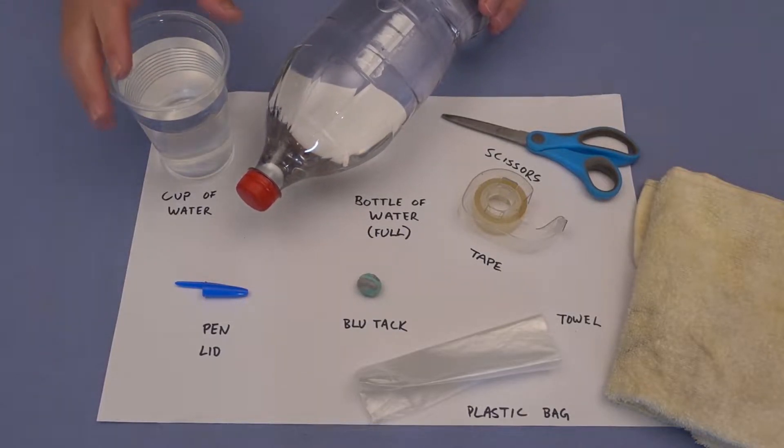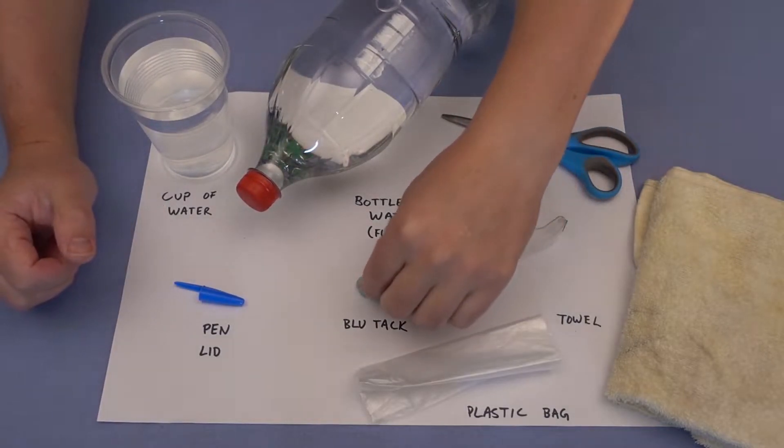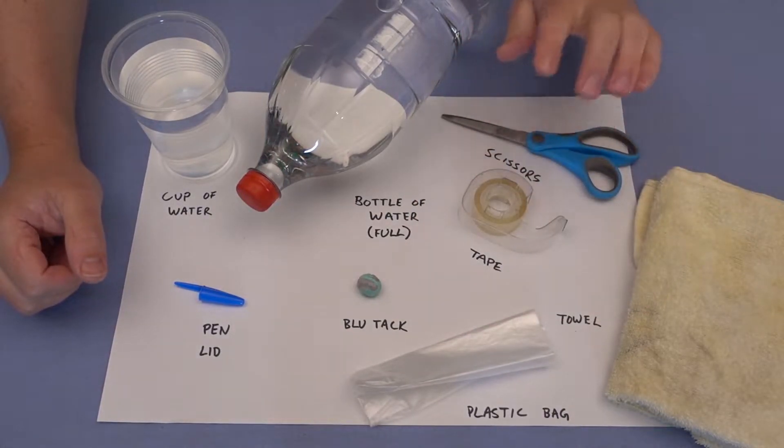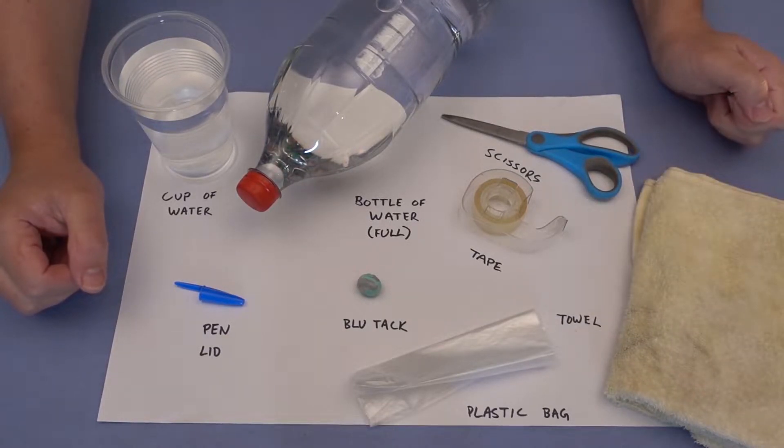We also need a cup of water for testing, we need a pen lid and some blue tack, we need a plastic bag, I'm using the leftover from my UFO, some tape and some scissors, and having a towel around is going to be good in case we make a mess.